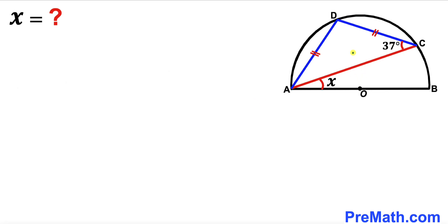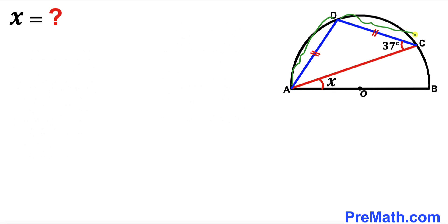Welcome to Premath. In this video we have got an isosceles triangle ACD fully confined in a semicircle with center O, such that angle ACD is 37 degrees, and side length AD is equal to side length CD.